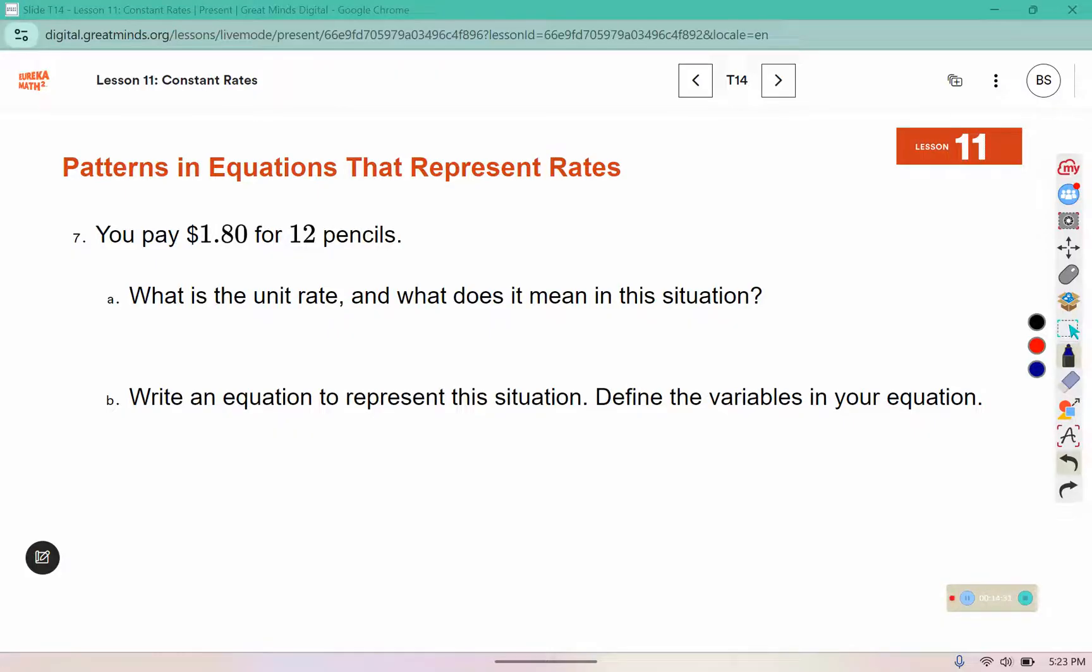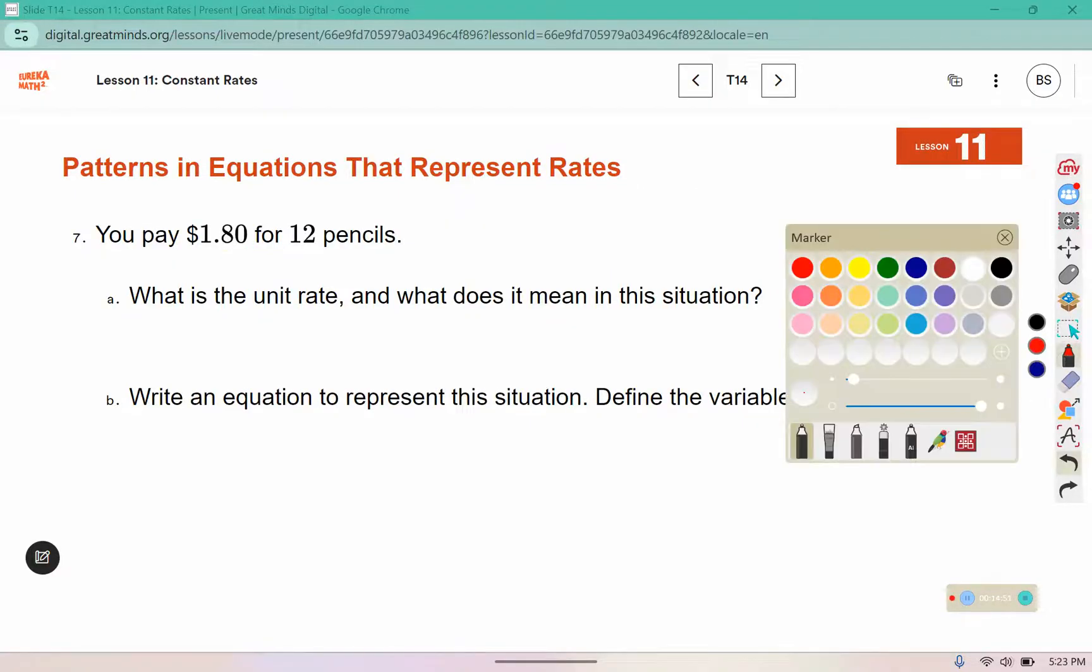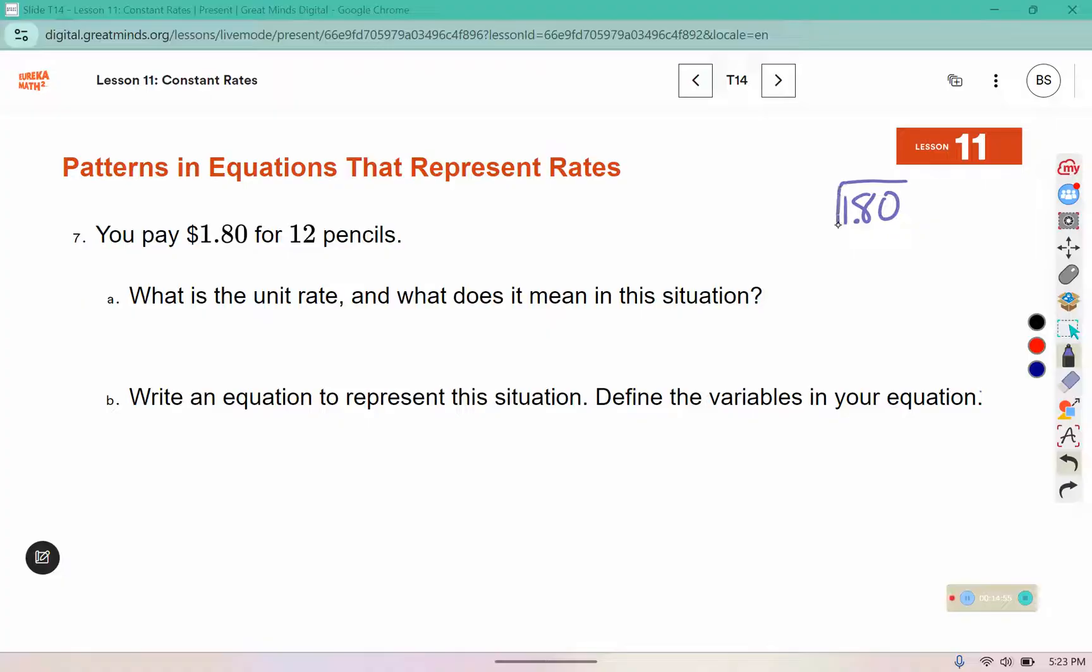You pay $1.80 for 12 pencils. In money scenarios, we typically divide the cost per something else. So we're going to do 1.80 divided by the pencils. 12 doesn't fit into 1, so we're putting a 0 there, and make sure your decimal is lined up. So 12 fits into 18 one time, 18 minus 12 is 6, bring down that 0, and 12 fits into 60 exactly 5 times. So that is 0.15. What does that mean in this situation? It means 15 cents per pencil.